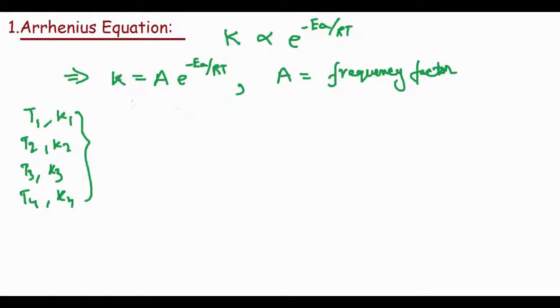We can plot ln K = ln A - Ea/RT. If we plot ln K versus 1/T, the slope gives -Ea/R and the intercept gives ln A.